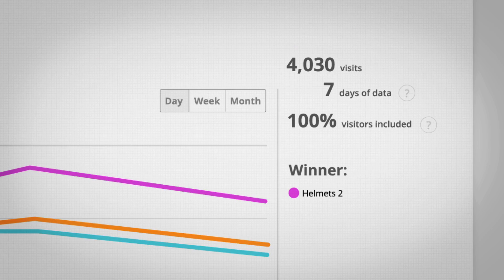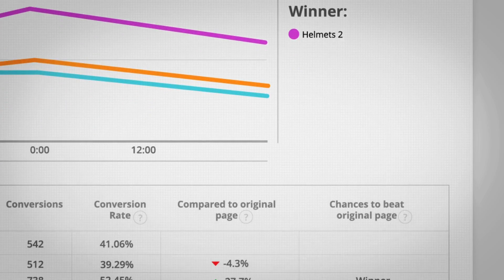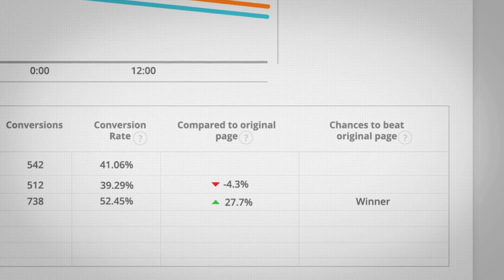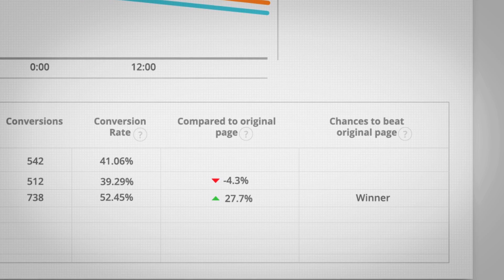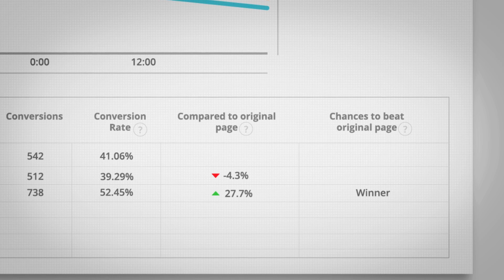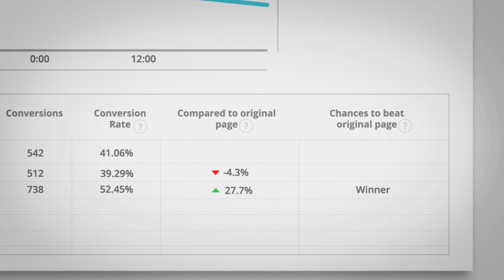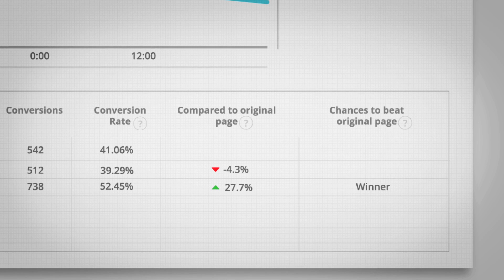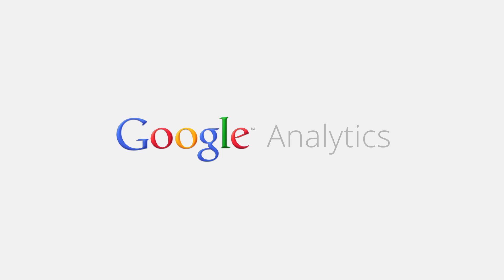The experiment ends once a winning variation is found, or once it's determined that none of the variations outperform the original. Content Experiments integrated into Google Analytics lets you improve your site experience and optimize conversion rates on the things that matter for your business. This is just the beginning — we'll be continually improving and adding useful features to help you create an even better site.